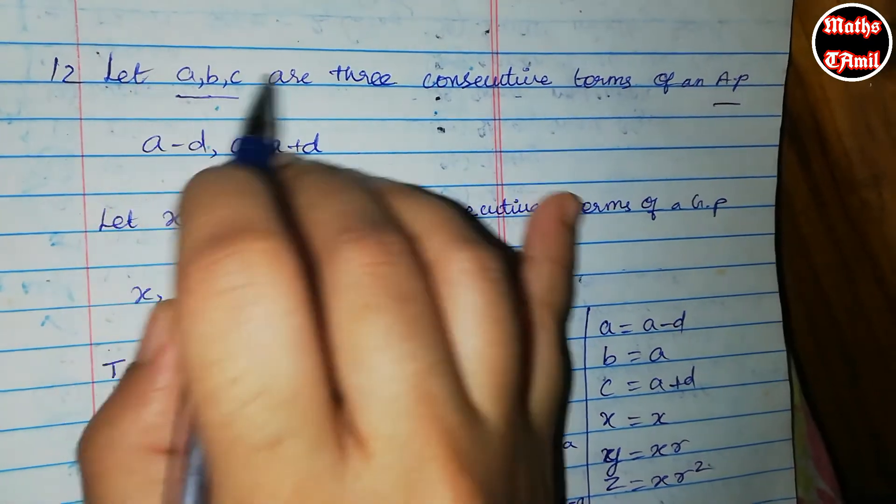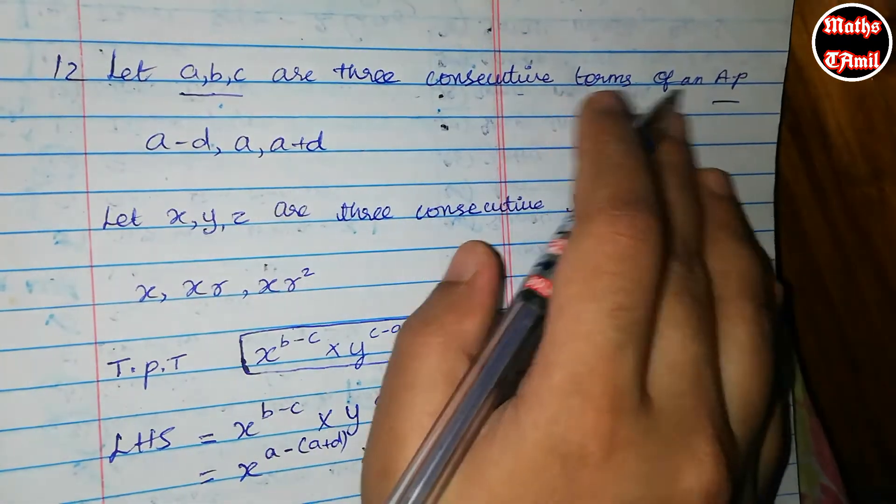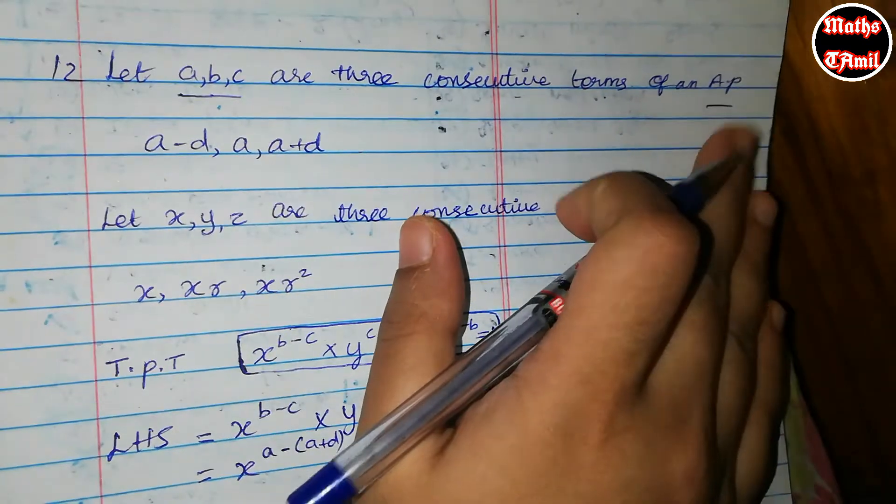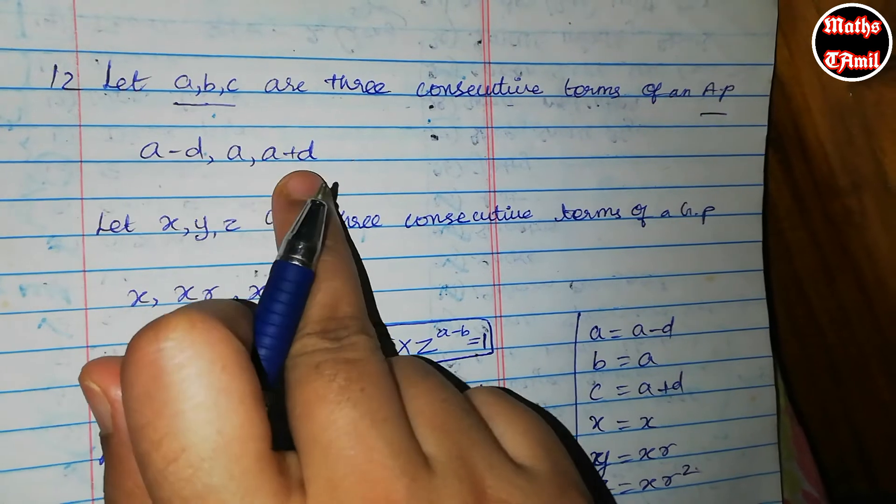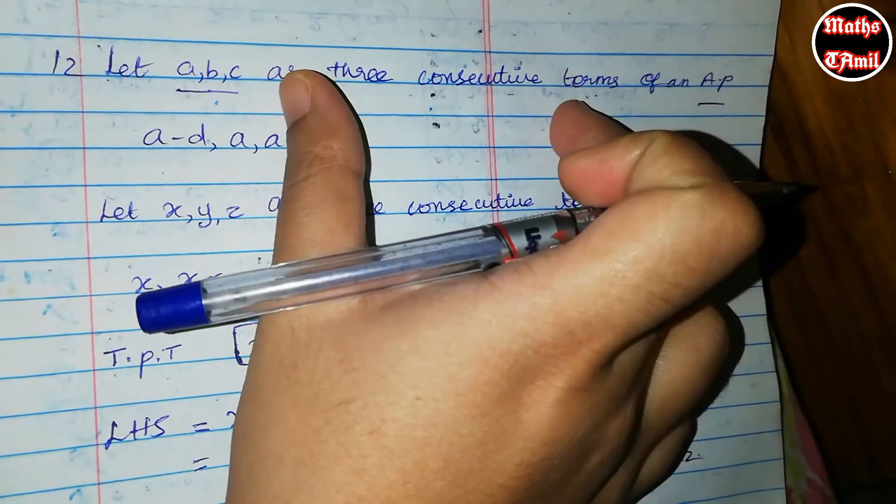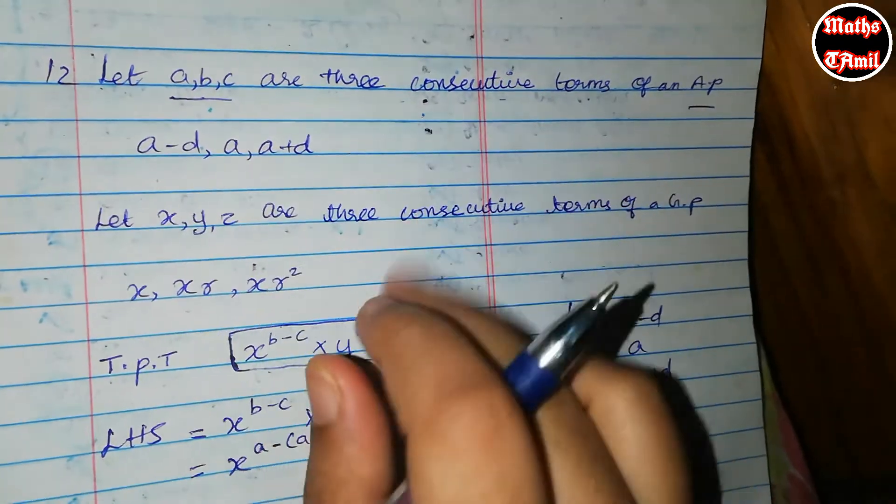Now, if you look at this question, A, B, C are three consecutive terms of an A.P. So for an A.P., the three consecutive terms can be written as A minus D, A, and A plus D.